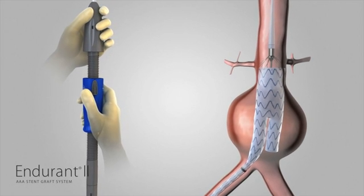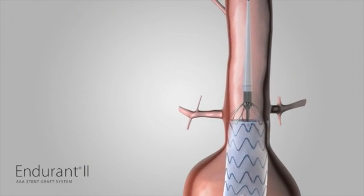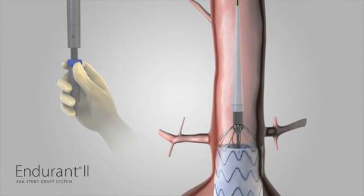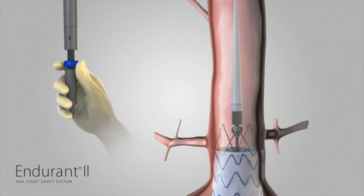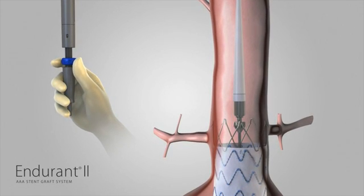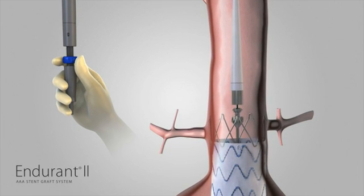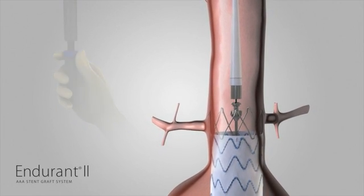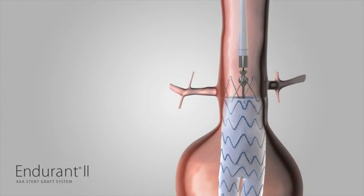Continue to hold the delivery system stationary with one hand on the front grip. With the other hand, rotate the back end wheel clockwise in the direction of the arrows to release the suprarenal stent with anchoring pins. Continue turning the back end wheel until all parts of the suprarenal stent are completely clear from the spindle of the delivery system. Confirm that the spindle has fully separated from the crowns of the suprarenal stent.